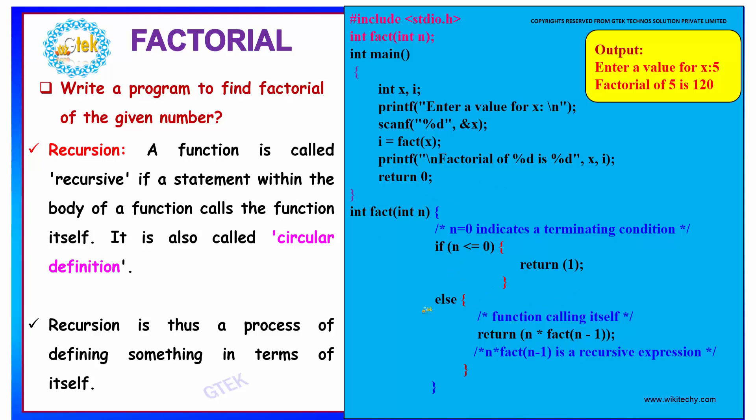That is, your value will be over. So finding a factorial is nothing but, if you say, the factorial of 5 is nothing but 5 into 4 into 3 into 2 into 1. So for doing that, we are decrementing 5 in each and every step.